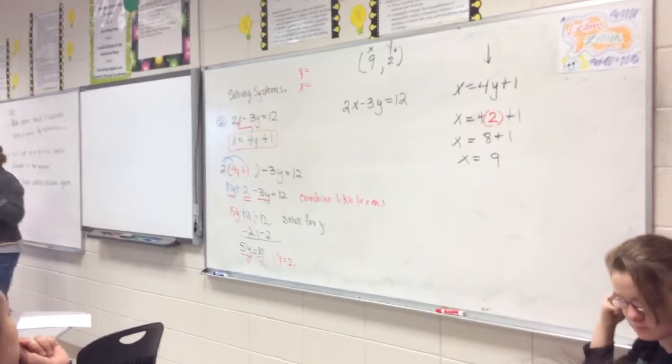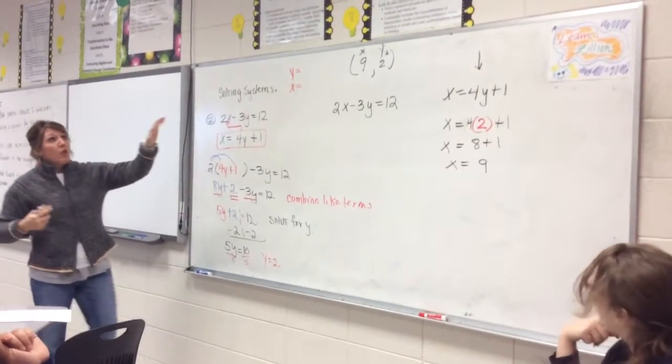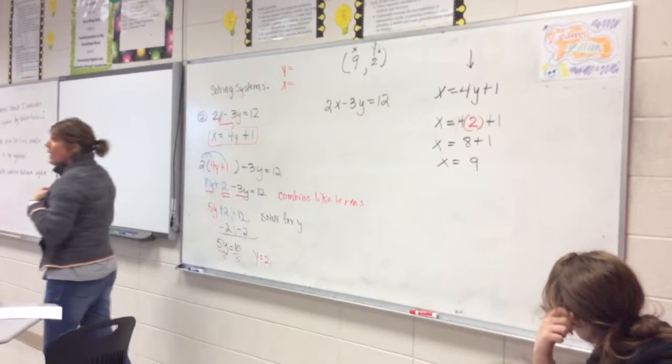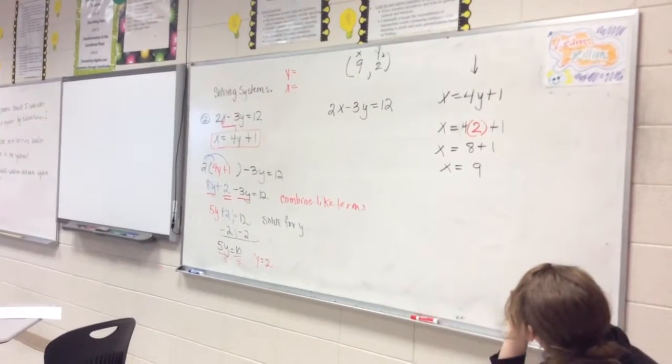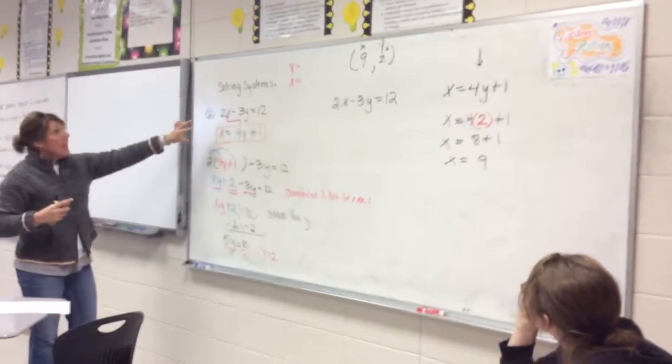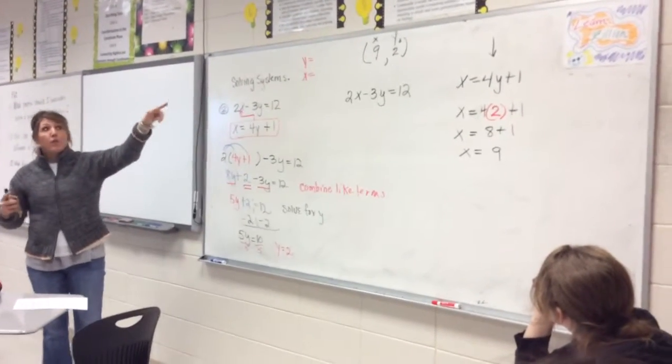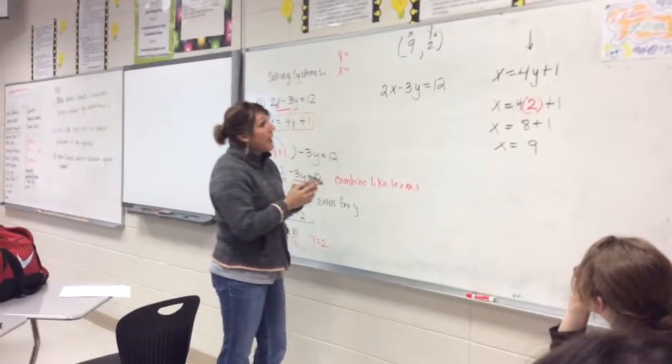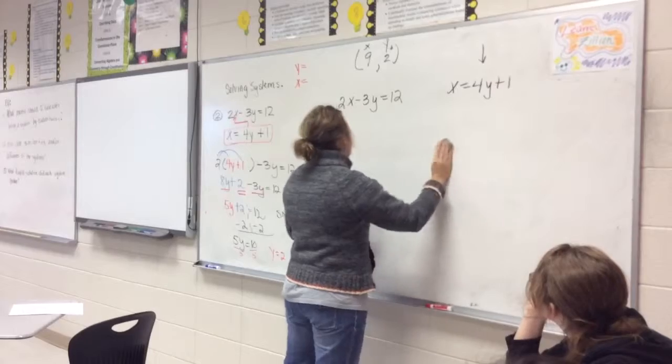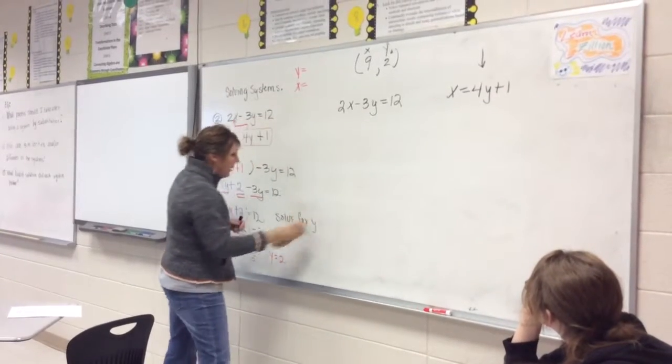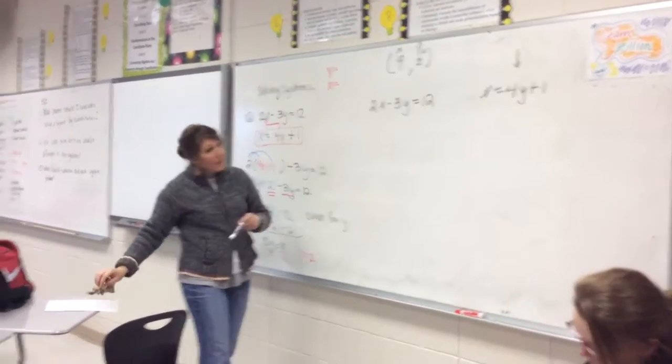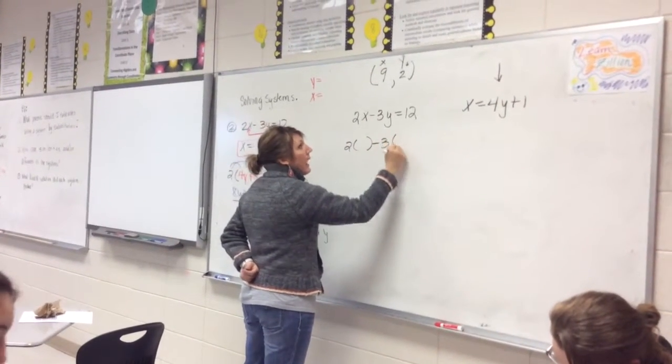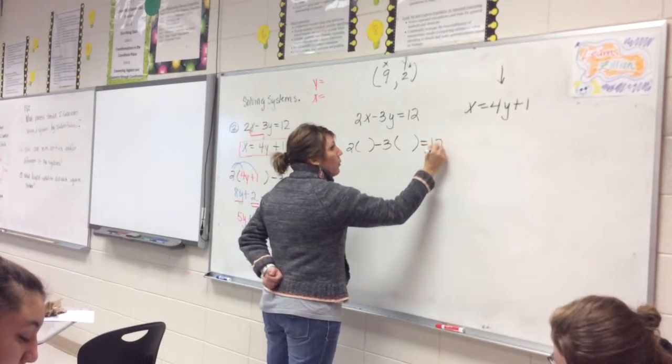Plug both in. Yeah, you're going to have to plug them back in because you're not really sure whether this coordinate point satisfies both equations. So you have to plug it back in to make sure that it satisfies both. And if it doesn't satisfy both, then your point that you got is not correct. And I have to say that that has come up before. Alright, so plugging it back in to the equation, you have 2 times 9 minus 3 times 2, which equals 12.